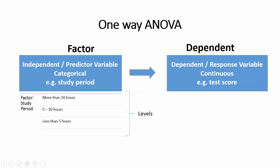As we see, in one-way ANOVA there is a single independent factor with a single continuous response variable. Remember, the independent variable is a factor, and the factor is a categorical variable that contains three or more levels.